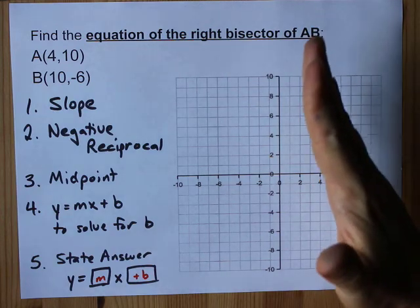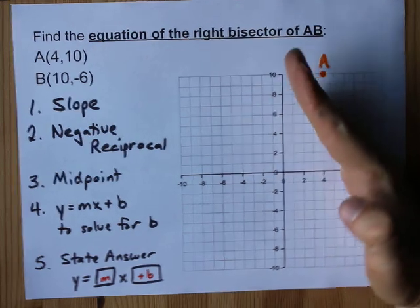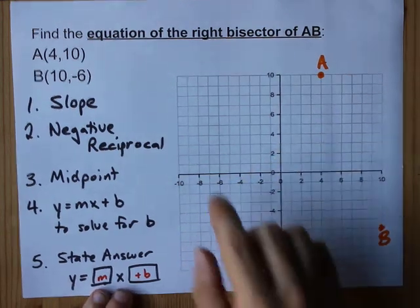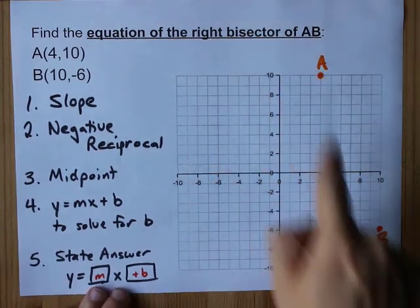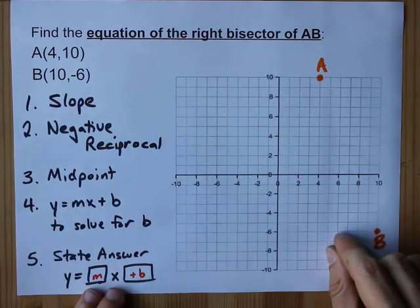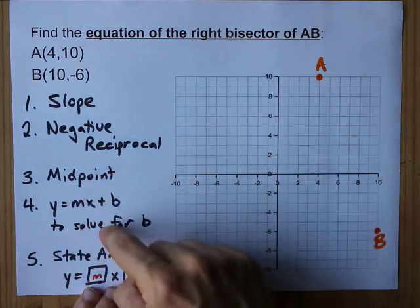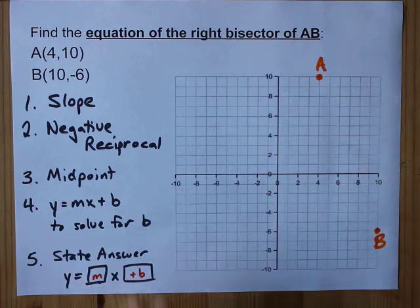and if you find the slope of AB, it will be 90 degrees to that slope. Your job is to find the slope between A and B, take its negative reciprocal, find the midpoint of A and B, and then use y equals mx plus b to solve for b. Here's what I mean.